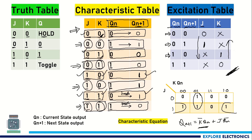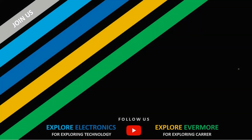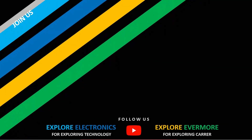So this is about the JK flip-flop: truth table, characteristic table, and excitation table. In the next videos, let us convert one flip-flop to another flip-flop and use these excitation tables and characteristic tables there. Thank you.